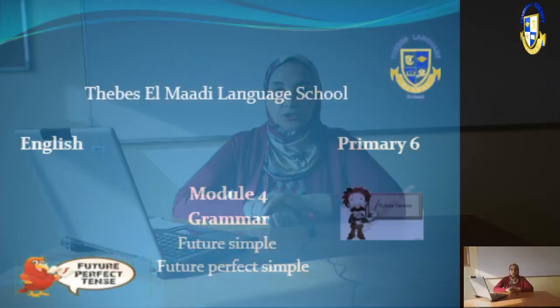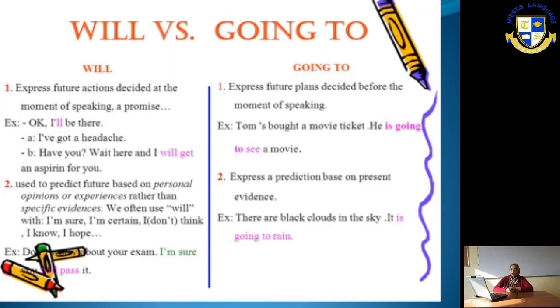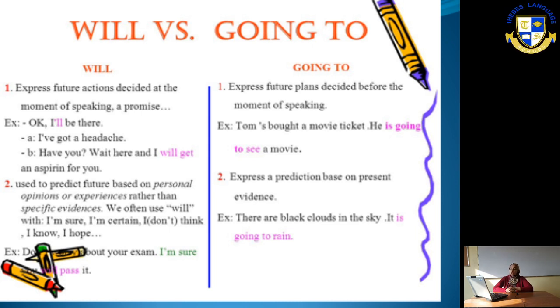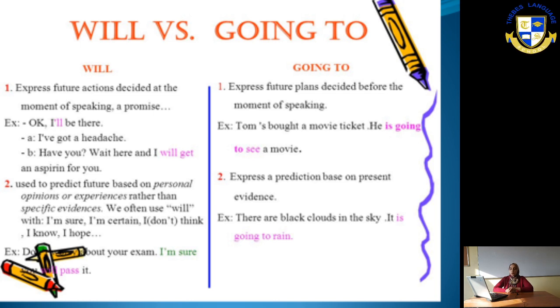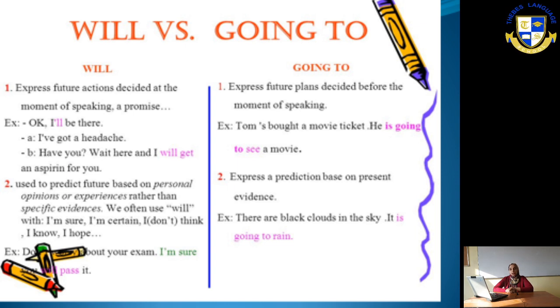In slide one, we have 'will' and 'going to' — these are what we use to express the future tense. Number one: we use 'will' to express future actions decided at the moment of speaking, meaning you don't have a plan for it beforehand.